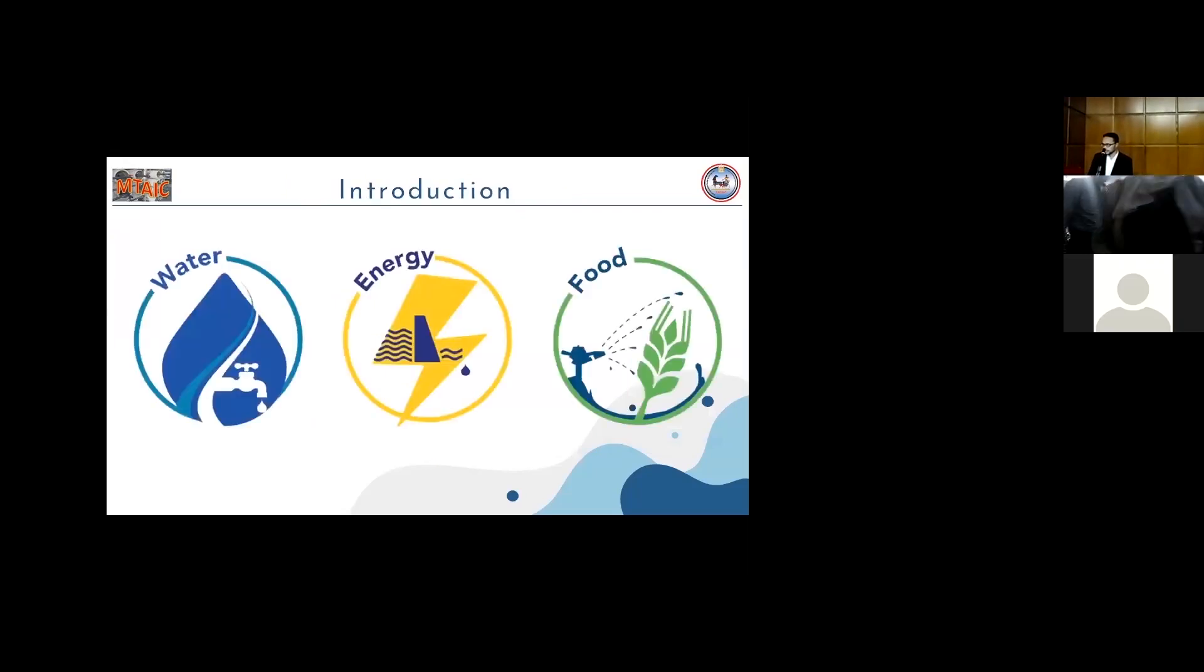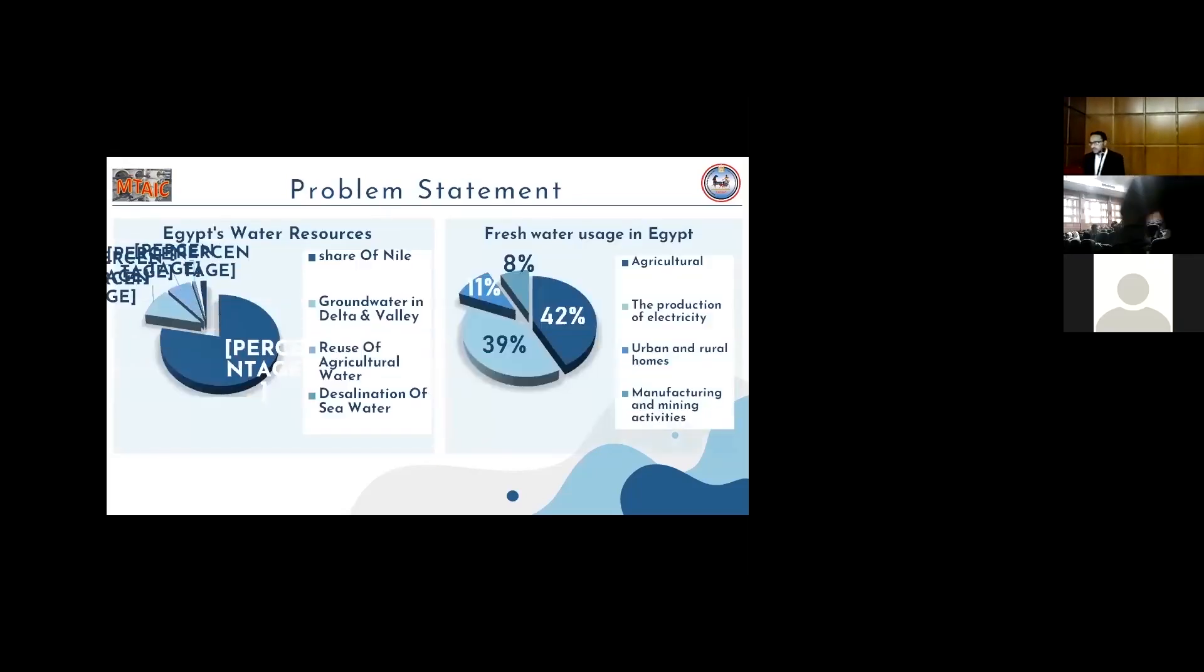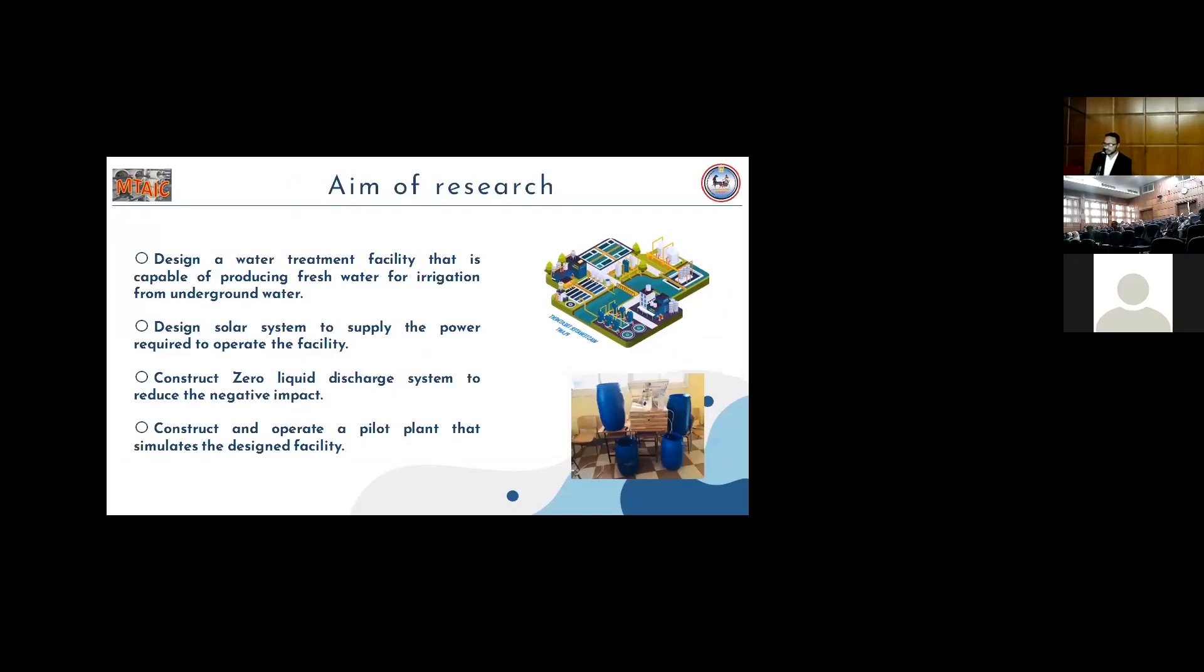The aim of this research is to design a water-taking facility that is capable of producing fresh water for irrigation from underground water. The study is designed to design a solar system to supply the power required for the RO system, construct a zero-liter discharge system to reduce the environmental impact, and construct and operate a pilot plant that simulates the giant system.